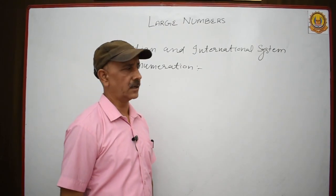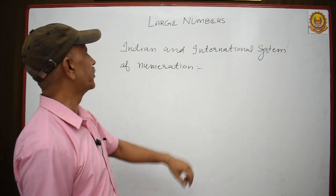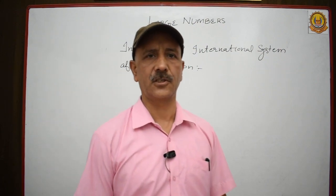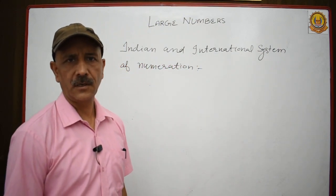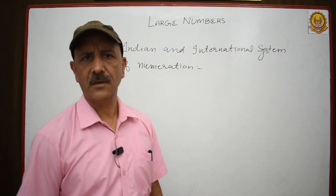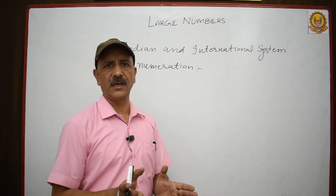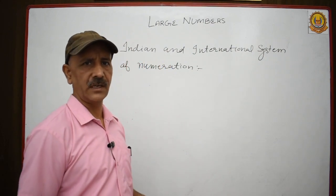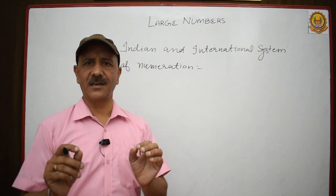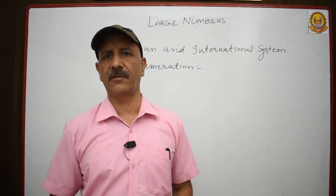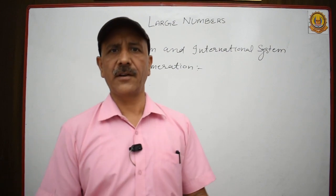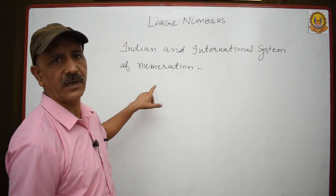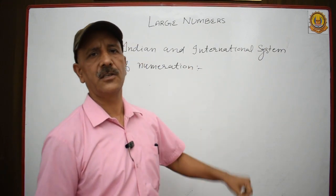Let me discuss this new topic from the same chapter: large numbers. They say Indian and international system of numeration. Numeration means a systematic arrangement or assigning a number — writing a number in a particular, systematic way. This topic is about Indian and international system of numeration.